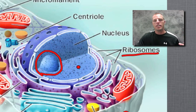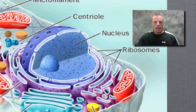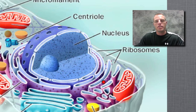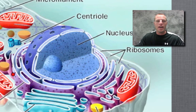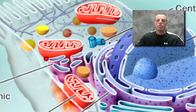Those ribosomes are found on this purple structure called the rough ER, or rough endoplasmic reticulum. Every little bump on it is a ribosome — it's called rough because those ribosomes make it look studded and bumpy. The rough ER helps make proteins and also transports them, acting as a highway system through the cell. We also have the smooth ER, which makes lipids. The biggest difference between smooth and rough is that there are no ribosomes on the smooth ER.